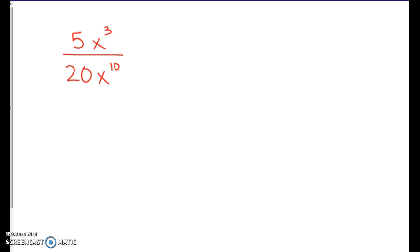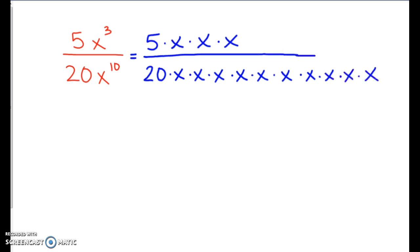Let's do 5 times x to the third power divided by 20 times x to the tenth. I'm first going to write it out in expanded form. I got 5 times my 3 x's and then 20 times my 10 x's. So same thing like we did on the last side. If we have x's or different variables in common with the top and the bottom, they kind of cancel each other out here.